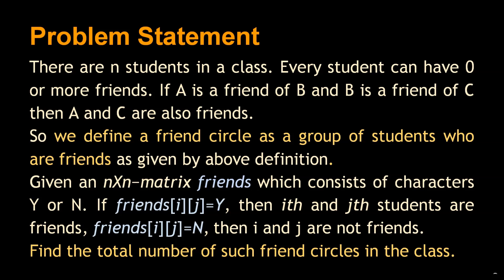We're given an n×n matrix friends consisting of characters Y or N. If friends[i][j]=Y, then the ith and jth students are friends. If friends[i][j]=N, then i and j are not friends. We need to find the total number of friend circles in the class.